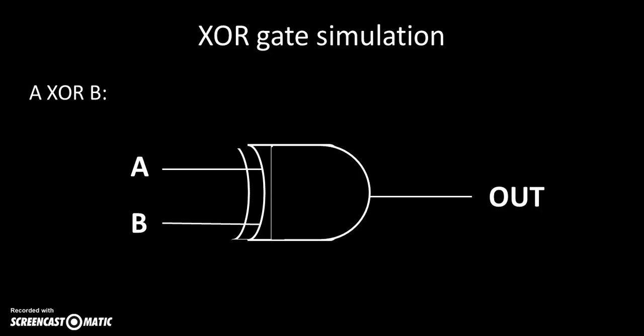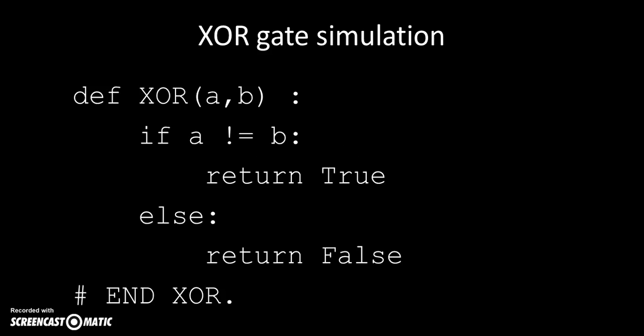The XOR gate is the exclusive OR. Only A or B can be true — if A is true and B is false it'll be true, and if B is true and A is false it'll be true. The code takes in A and B, and if A is not equal to B, return true, else return false. That works because if A is false and B is true, or the other way around, it's true. Whereas if they're both true or both false, we return false.